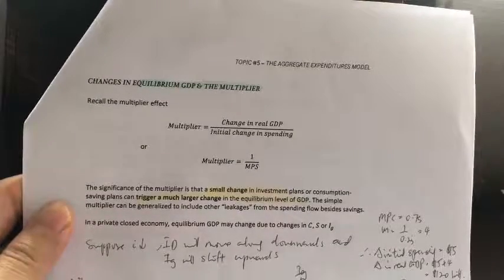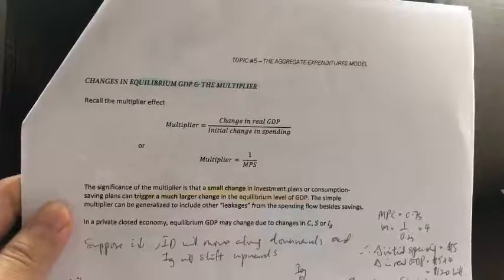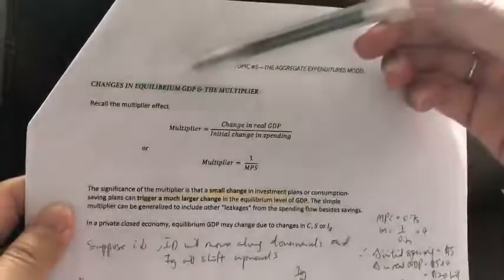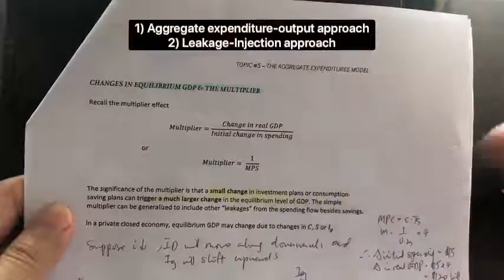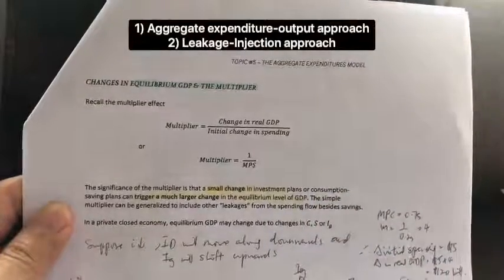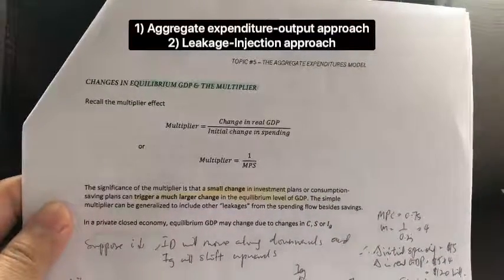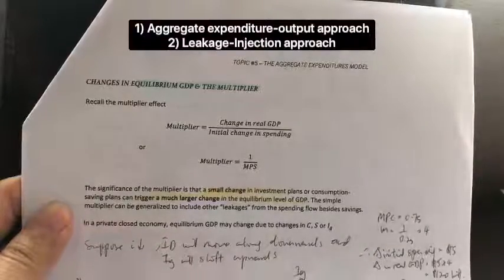Now, recall in the previous two videos, we have learned how to determine equilibrium GDP using two methods. The first method or approach was the aggregate expenditure and output approach. And the second was the leakage injection approach.